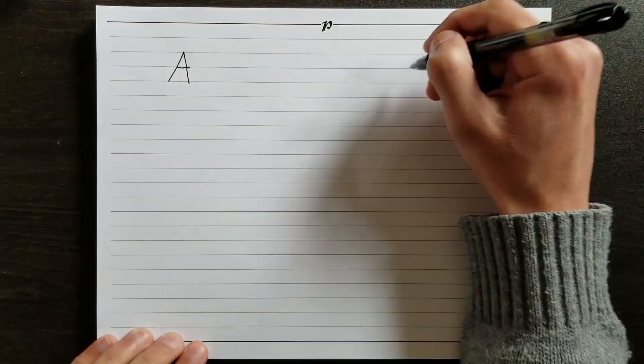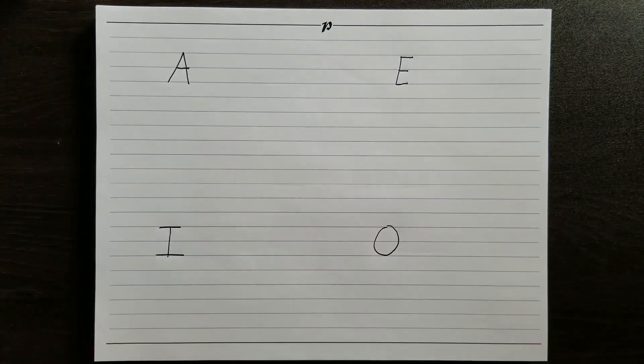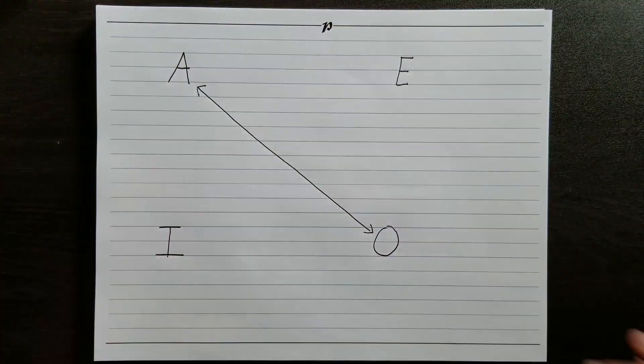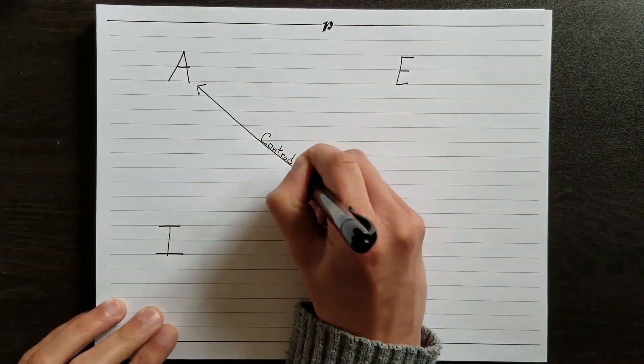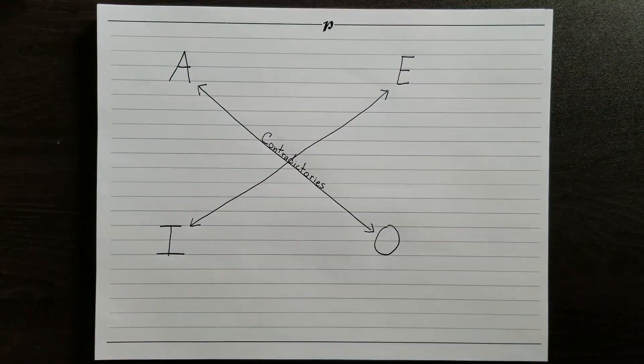There are a bunch of these relations between the four types of statements, and the traditional square of opposition is a neat way of organizing them. We're going to draw up the square little by little, working our way through each relation, until you're an expert. First, you place the letters A-E-I-O like this. The first relation we'll cover is the one we just briefly talked about: A-type and O-type statements are contradictories.